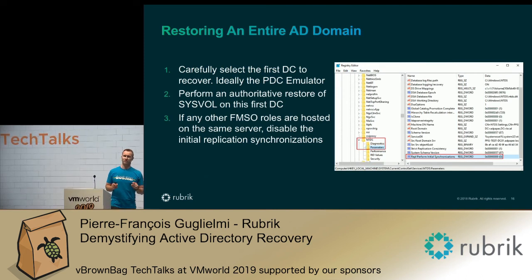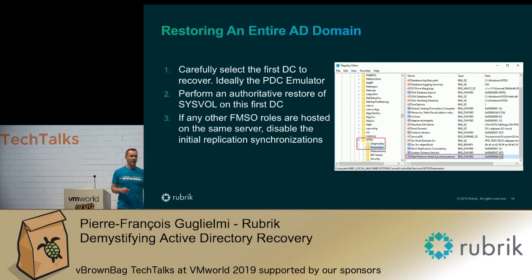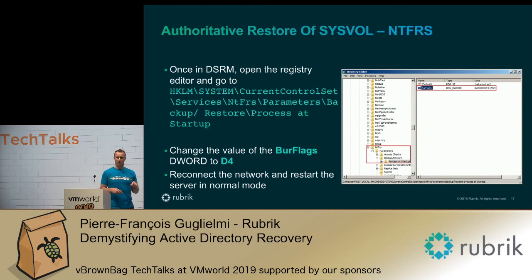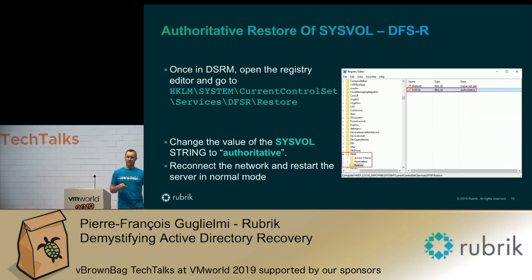If you have to recover an entire Active Directory domain, the steps are pretty much the same, except that for the first DC — which will probably be the PDC emulator in most cases — you will have to do a SysVol recovery which will be authoritative. You will also have to turn off initial synchronization if you have other FSMOs hosted on the same server. To do an authoritative restore of SysVol with NTFRS, use the same registry key but set BurFlags to D4, then reconnect to the network and restart in normal mode. For DFSR, still the SysVol key, set it to authoritative, reconnect to the network, restart. Once the first domain controller is fully recovered, you can do the non-authoritative restores of the other ones.